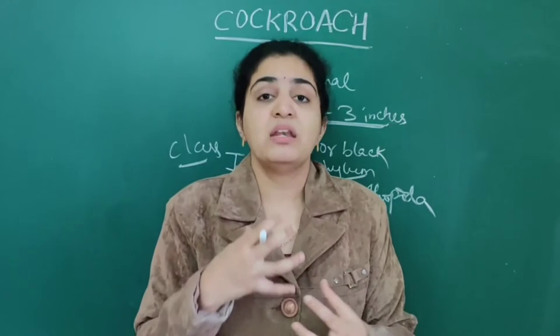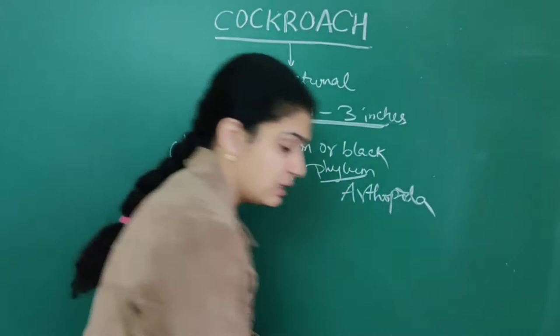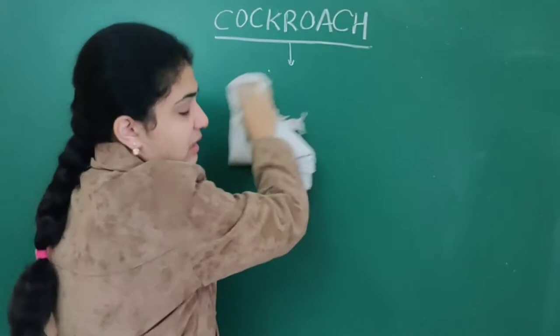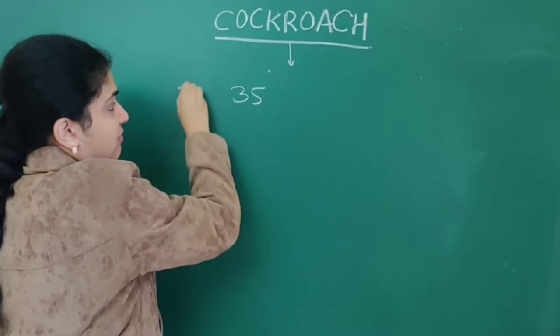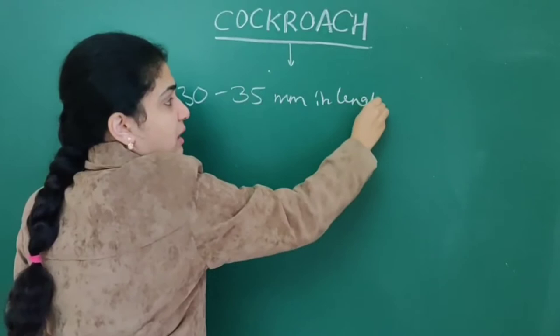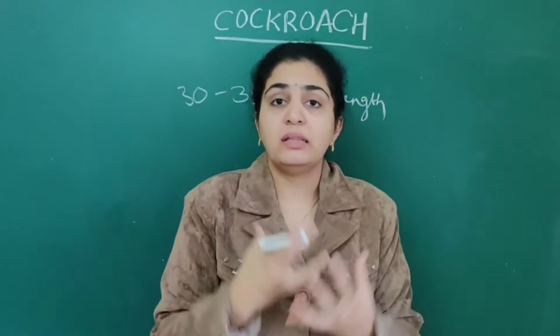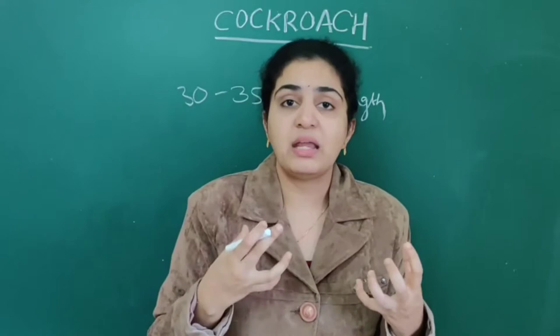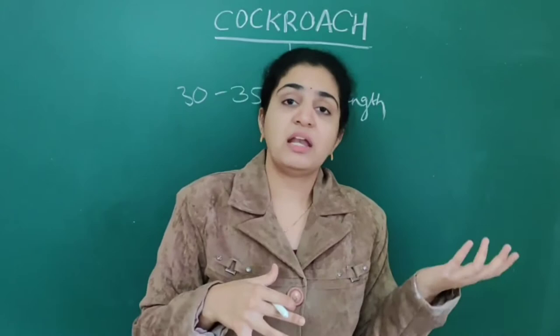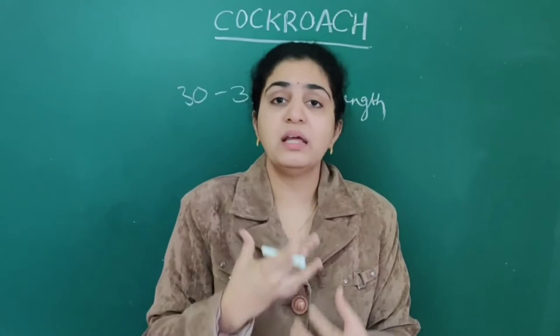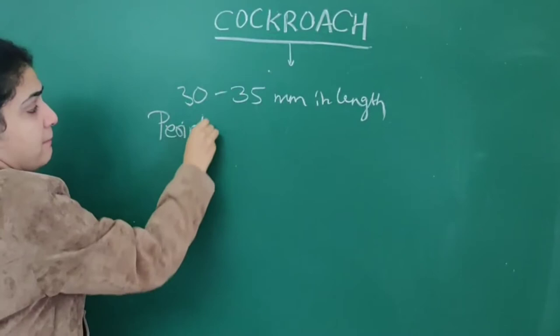Next, we are going to read about the anatomy of the cockroach. The cockroach is about 30 to 35 mm in length. The most common Indian cockroach is Periplaneta americana — just as with earthworm where we have Pheretima and Lumbricus, for cockroach the scientific name is Periplaneta americana.